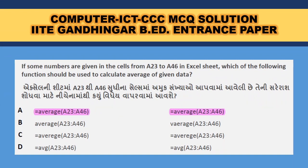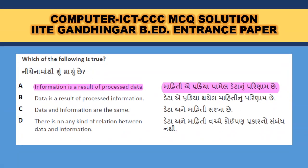Some numbers are given in the cells from A23 to A46 in an Excel sheet. Which of the following functions should be used to calculate the average of the given data? When you want to calculate average: equal sign, then AVERAGE, then the range. The range is A23 to A46, so A is the correct answer.